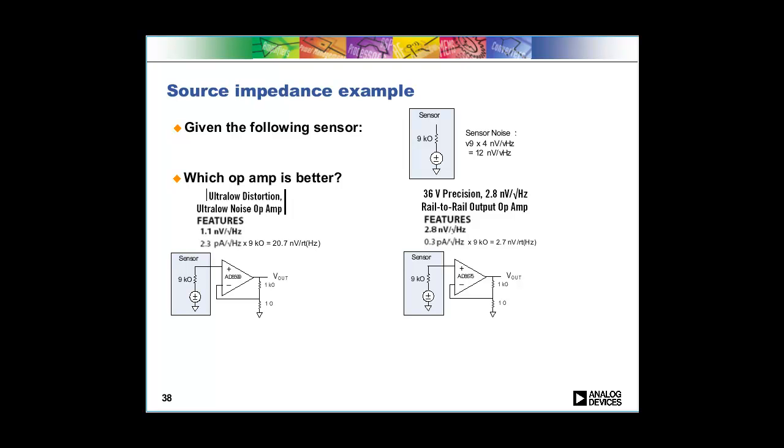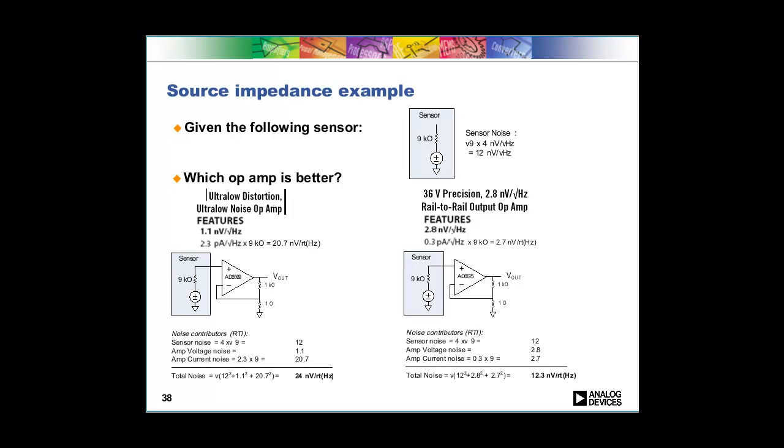So in the final analysis when you add up all the signals together, you find out that the AD8599 even though it's this really low noise 1.1 nanovolts root hertz has much higher noise than the other option.